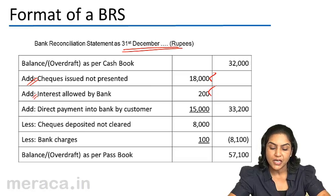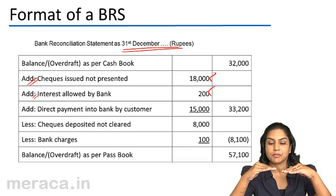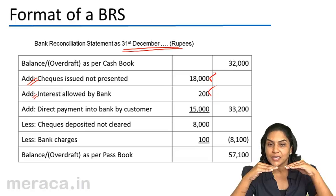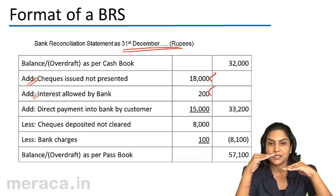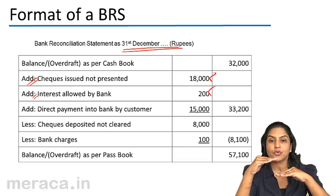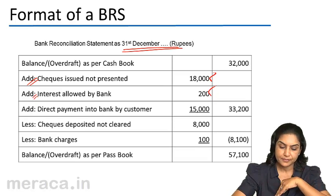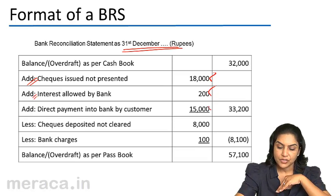Similarly, there was a direct payment into the bank by a customer. The moment the customer deposited money, the passbook balance went up. The cashbook balance is here. We have started from the cashbook in order to arrive at the passbook balance, so we add $15,000.